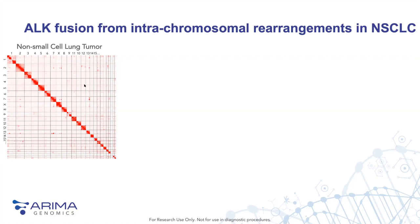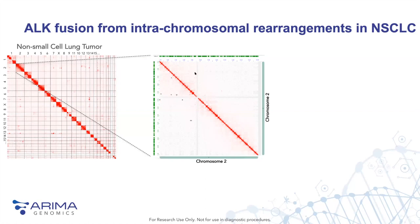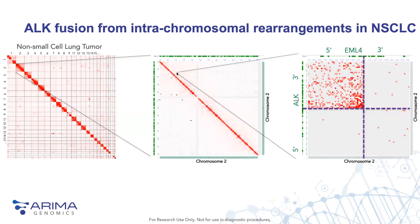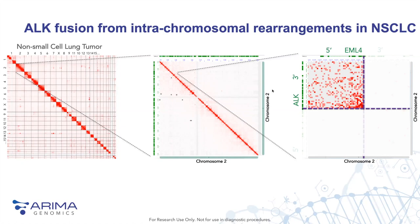For intrachromosomal rearrangements: ALK tends to rearrange with EML4 in non-small cell lung cancer. Zooming into chromosome 2, you can see tiny red blips in the Hi-C heatmap and black boxes around the structural variant calls in the lower left of the matrix. Zooming further in, you can learn about the structure of the gene fusion — here is the five-prime side of EML4 and the three-prime end of ALK: an EML4-ALK fusion in non-small cell lung cancer.